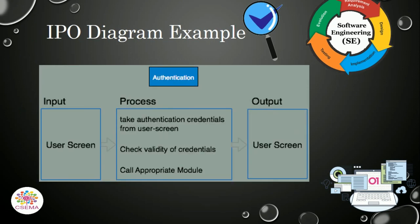Here is the IPO diagram for the Authentication Support module, where the first section is Input, the second is Process, and the third is Output. In the Input module, the user provides input that could be a username or password to authenticate and get access to the software system.